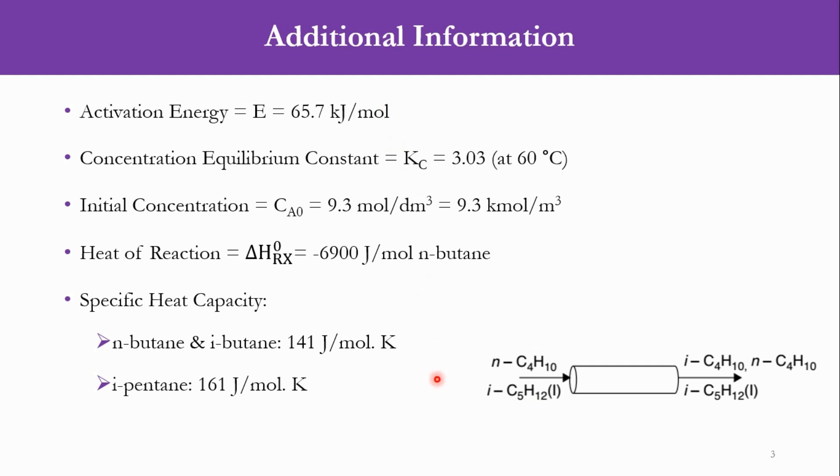This is the information that has been given to us: activation energy is 65.7 kJ per mole, Kc which is concentration equilibrium constant is 3.03 at 60 degrees centigrade. Initial concentration of the reactant which is A, which is n-butane, CA0 is 9.3 mol per cubic decimeter or 9.3 kmol per cubic meter. Heat of reaction for the system is -6900 J per mole of normal butane, and specific heat capacity for butane is 141 J per mole per Kelvin, while that of isopentane is 161 J per mole per Kelvin.